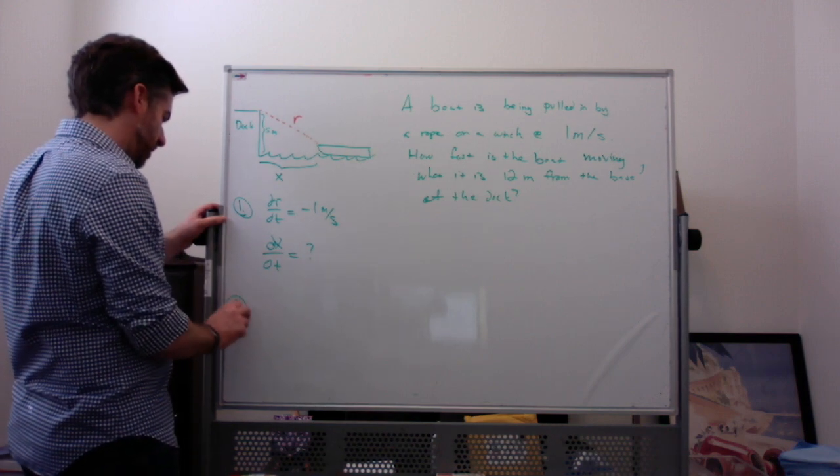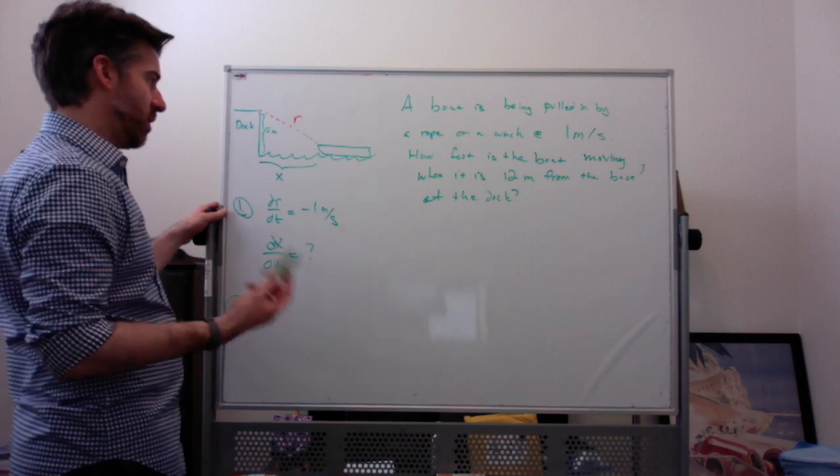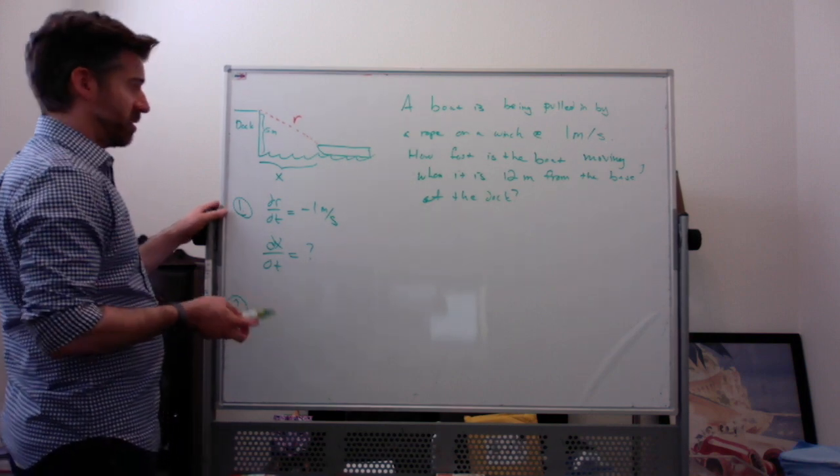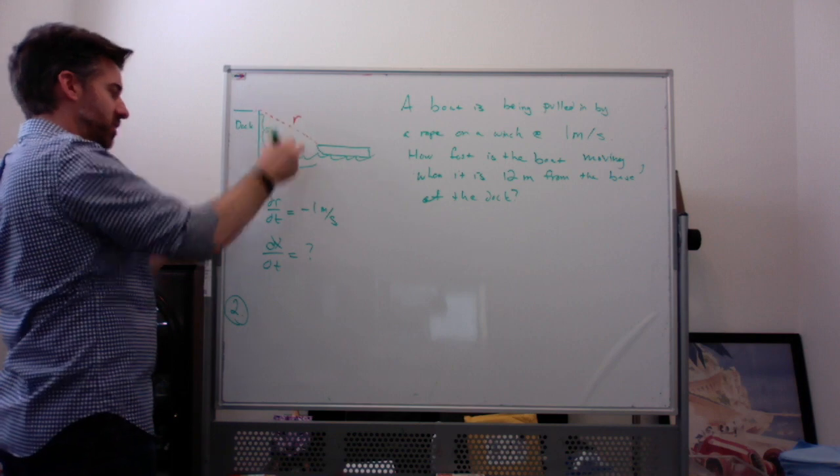So then the second thing we do after we identify what's changing, is we write an equation relating the variables. Here it's going to be a Pythagorean theorem kind of thing, X squared plus 5 squared equals R squared.